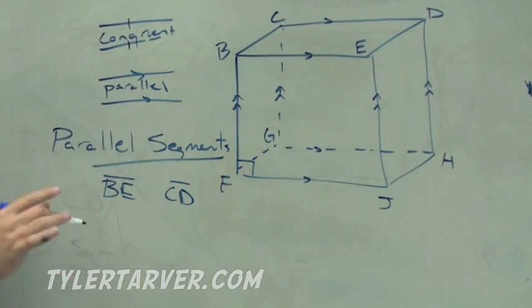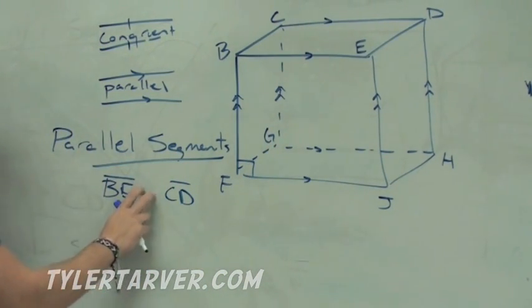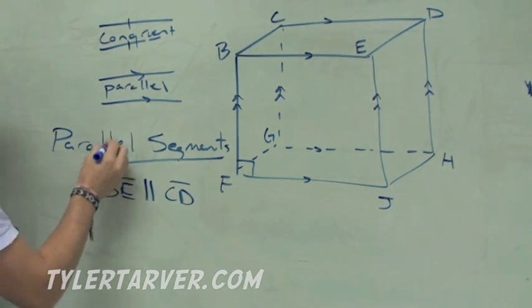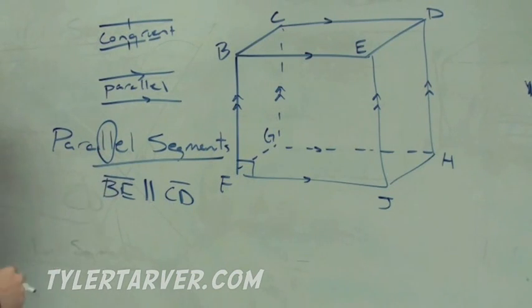Now, when you write parallel, you want to pair up two segments and say they're parallel. The symbol is two parallel lines in between it. So BE is parallel to CD. You want to know how to remember that? It's right there in the word, parallel. That's your symbol.